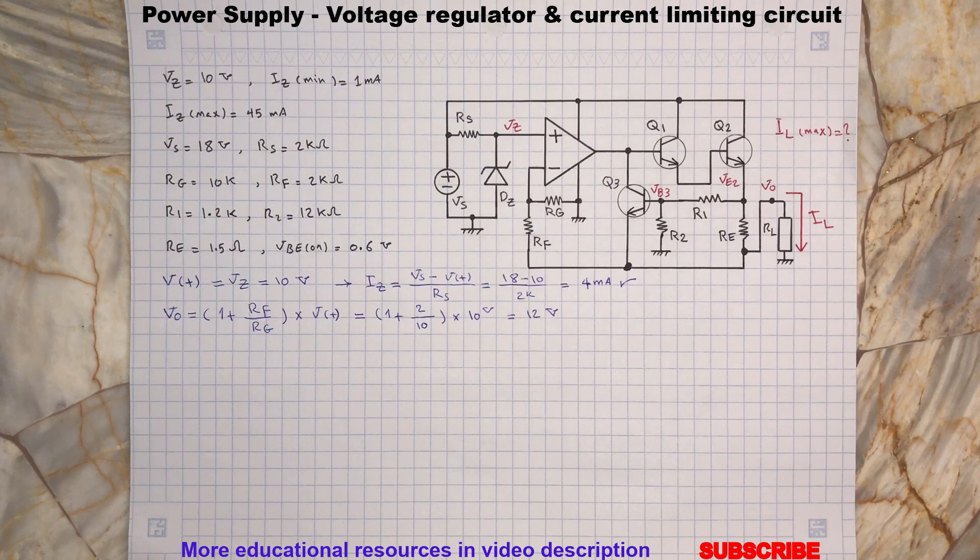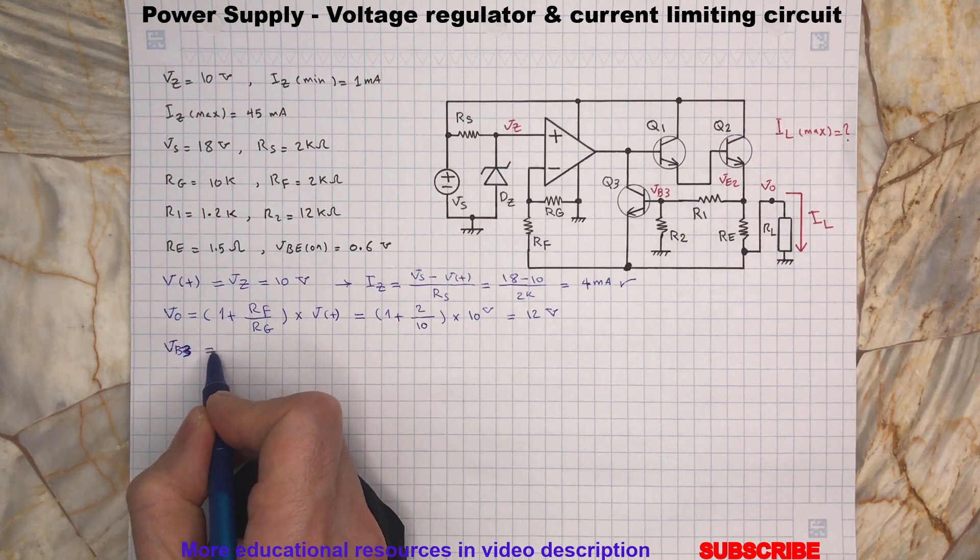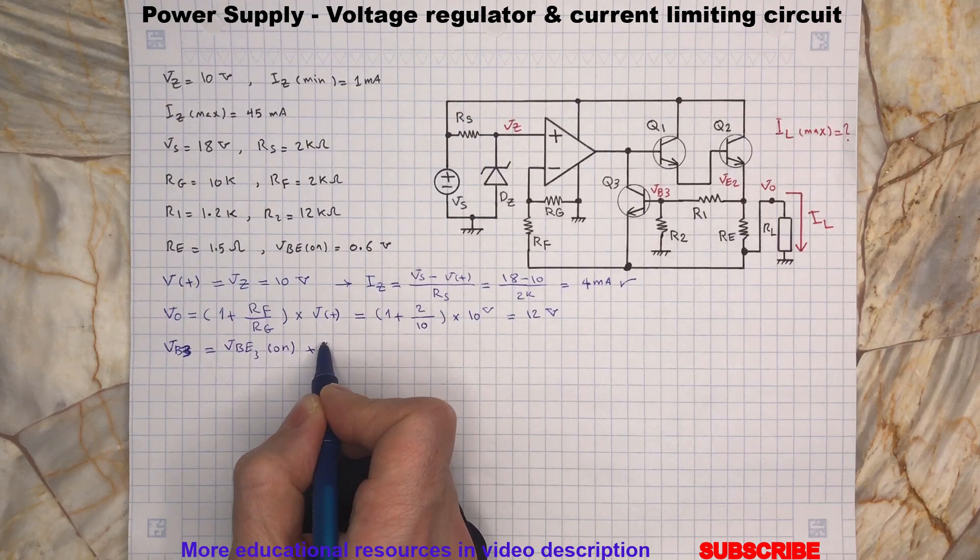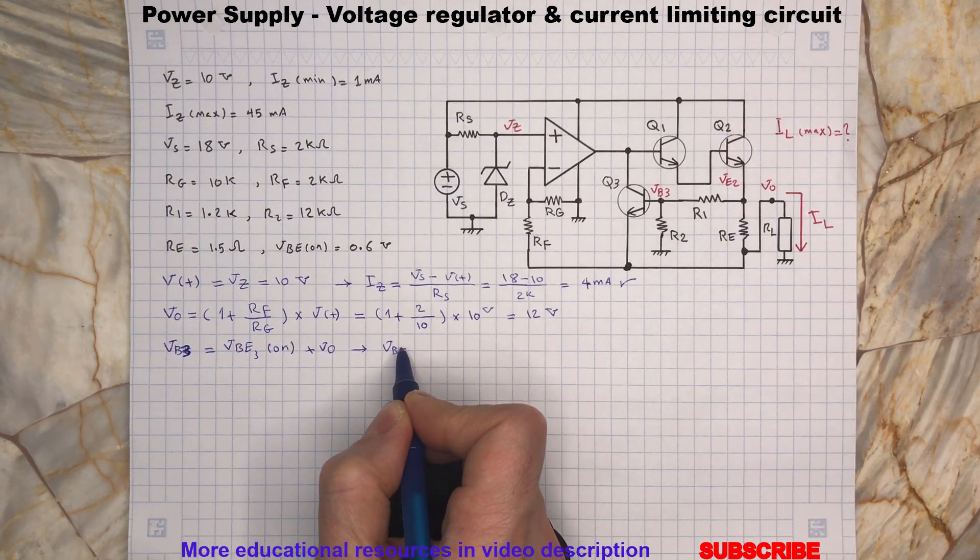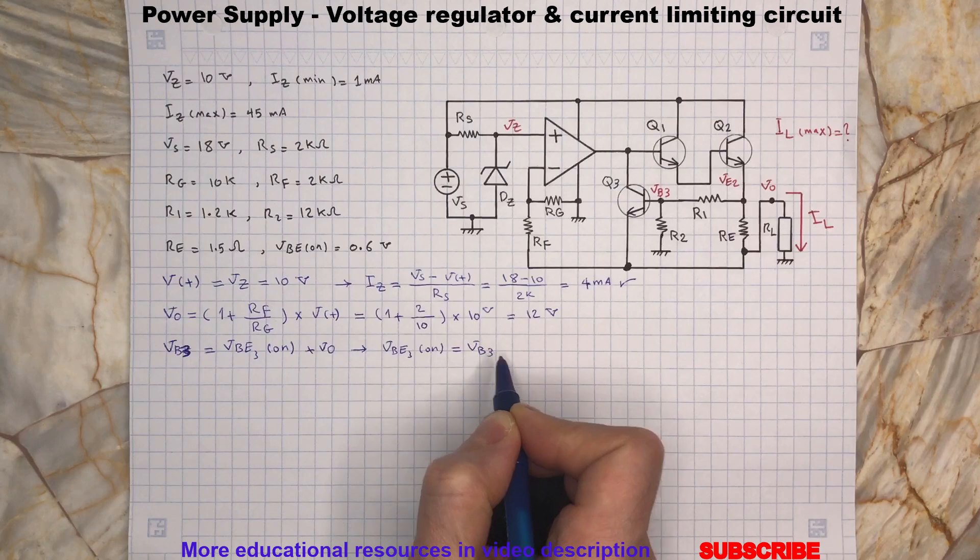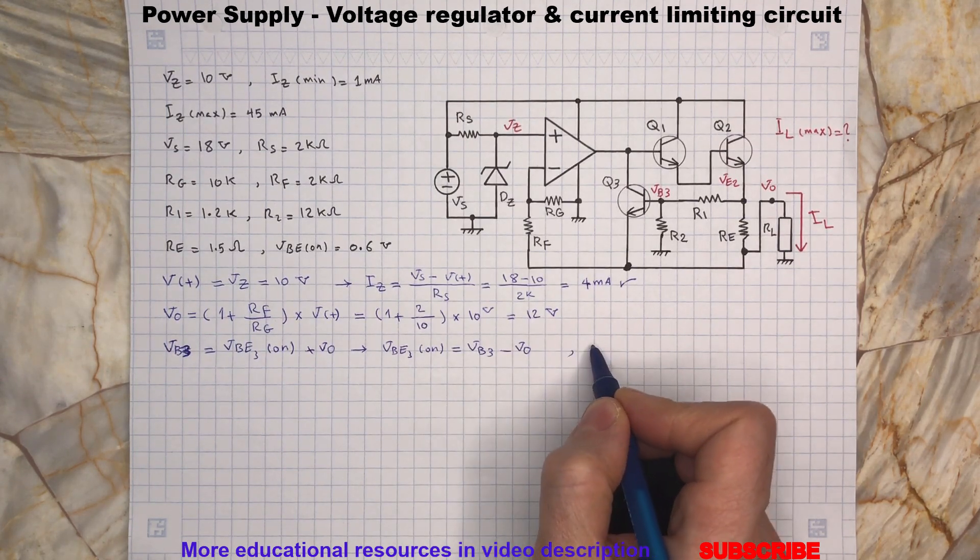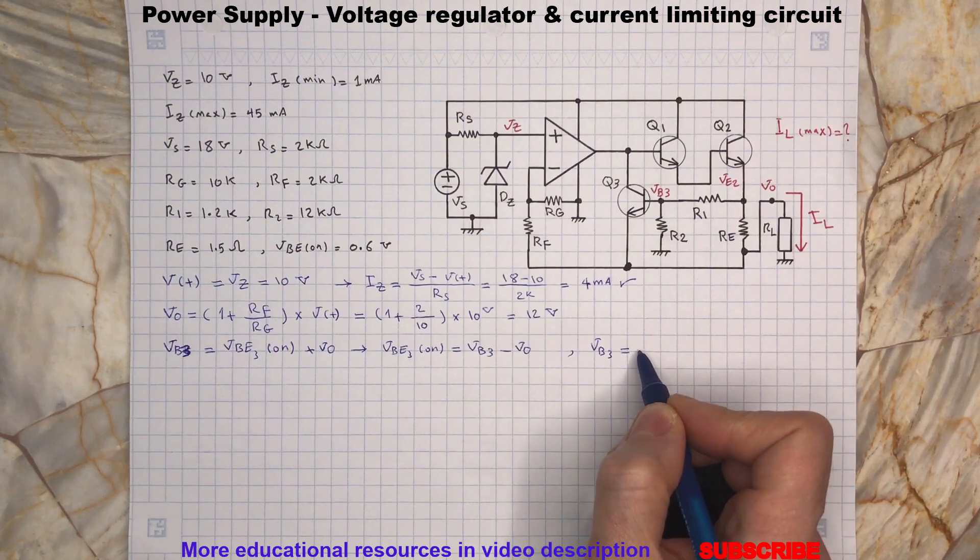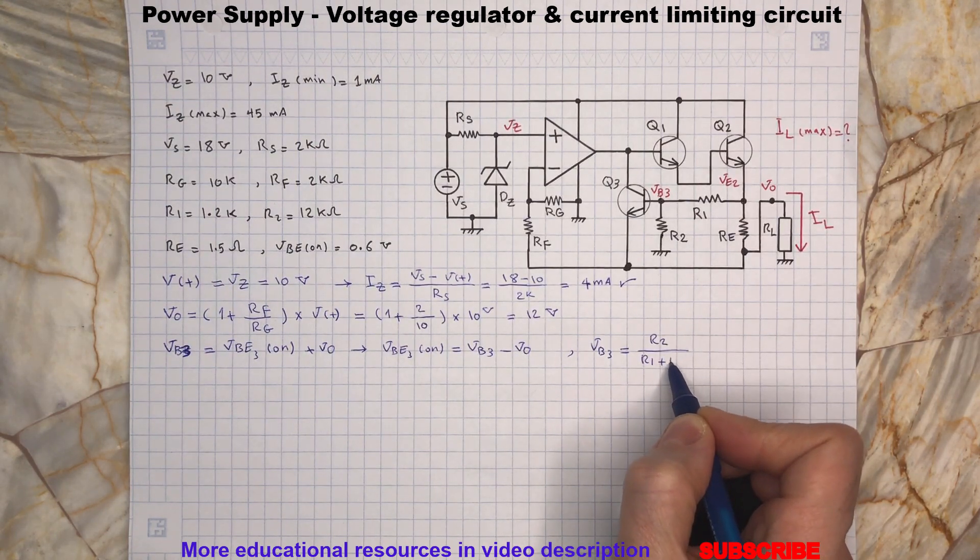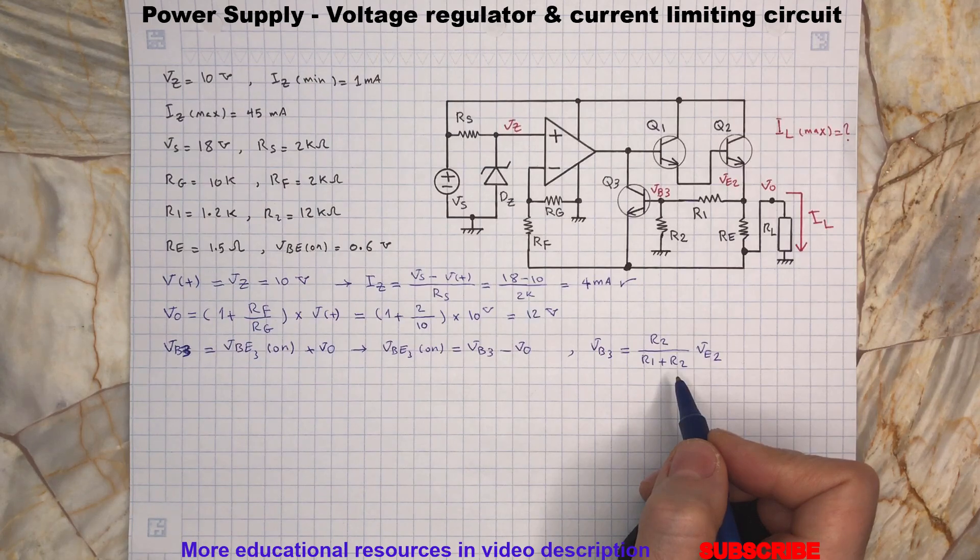For the current limiting transistor Q3 we will have the following. And we also note that the base voltage for Q3 will be as shown. And the maximum output current condition will be as follows.